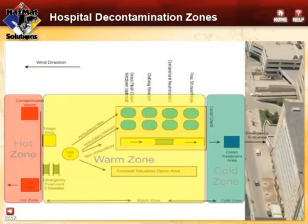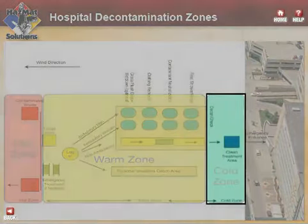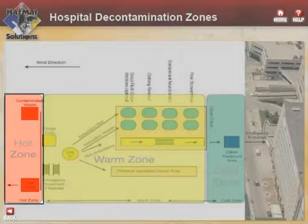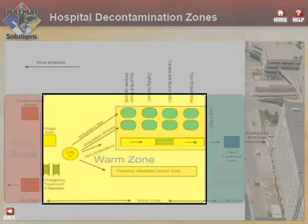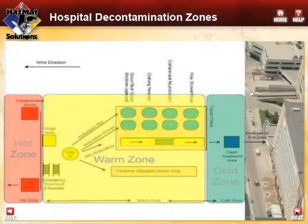The emergency treatment area can be divided into three zones that HAZMAT first responders can readily identify: hot, warm, and cold zones. The hot zone is where self-dispatched victims or patients from ambulances are staged while awaiting triage — this is the area with the highest potential for contamination. The warm zone consists of the decontamination lanes for ambulatory and non-ambulatory patients. All patients should be free of hazardous substances prior to entering the clean treatment area of the cold zone.